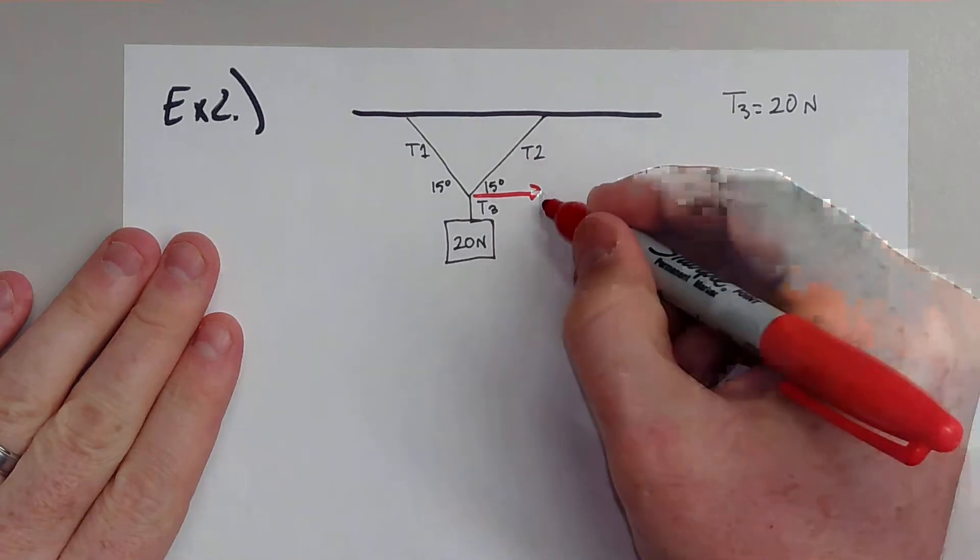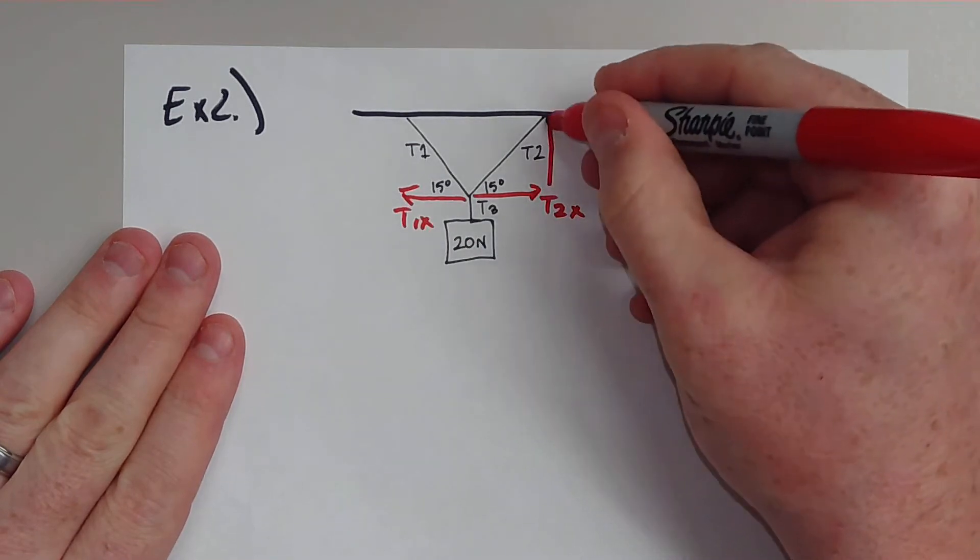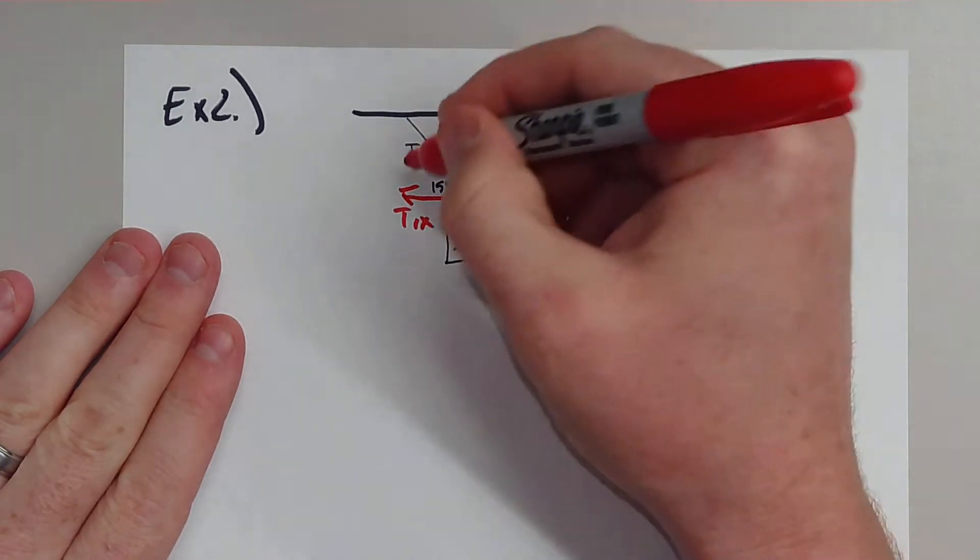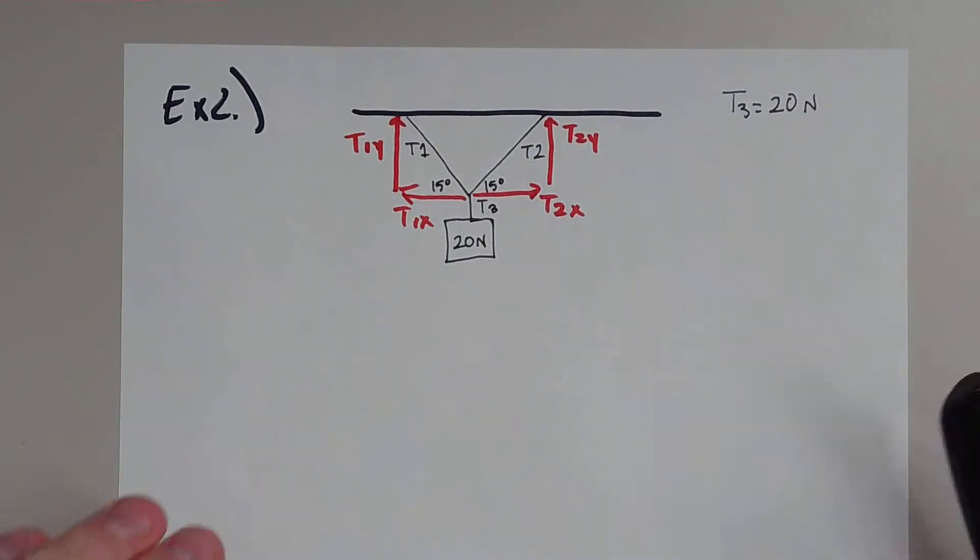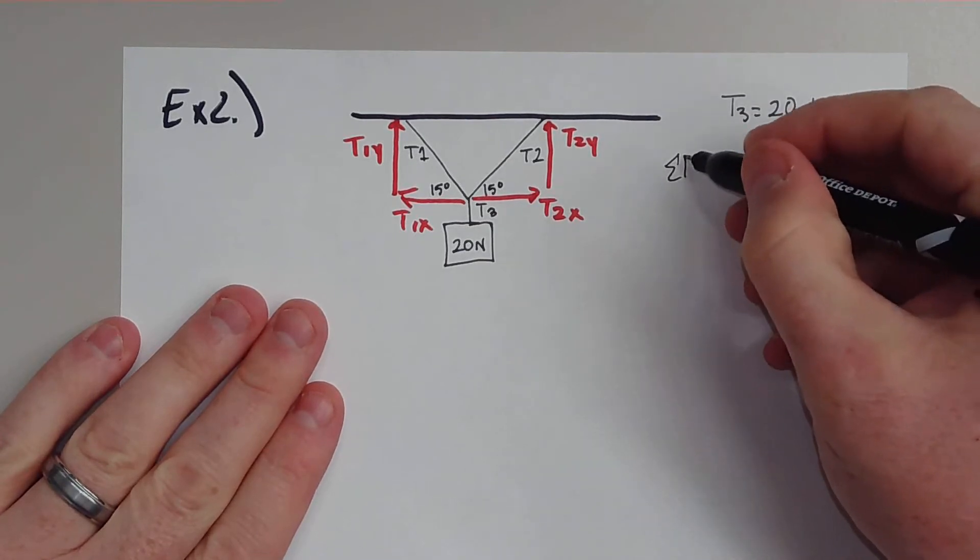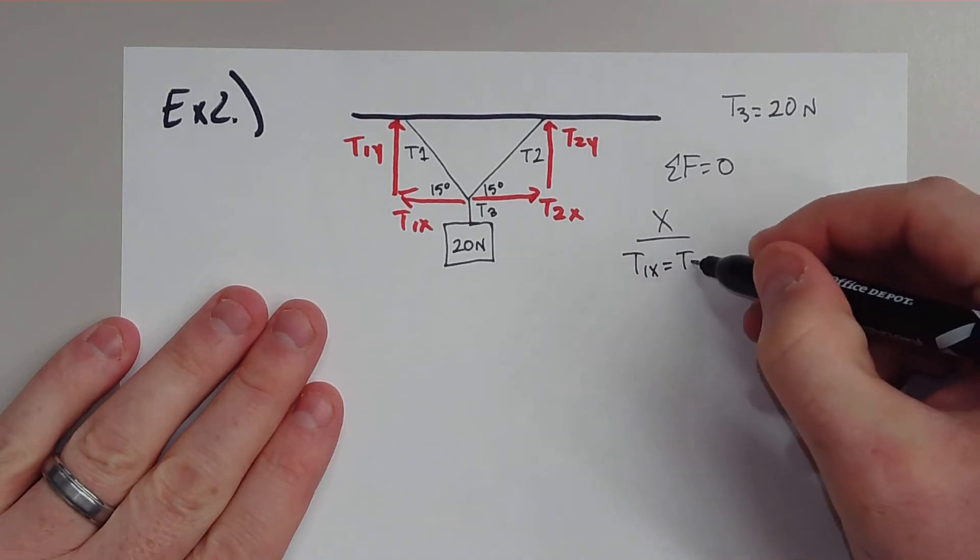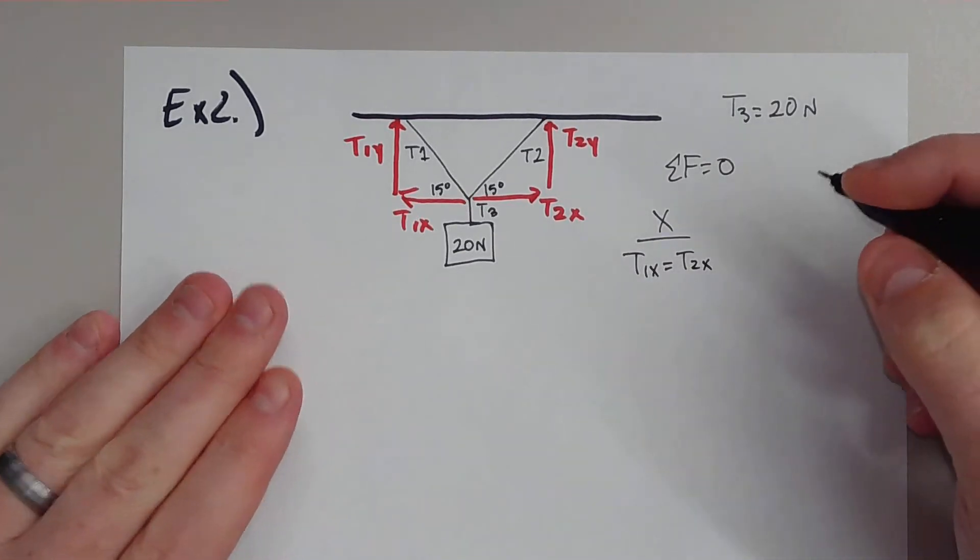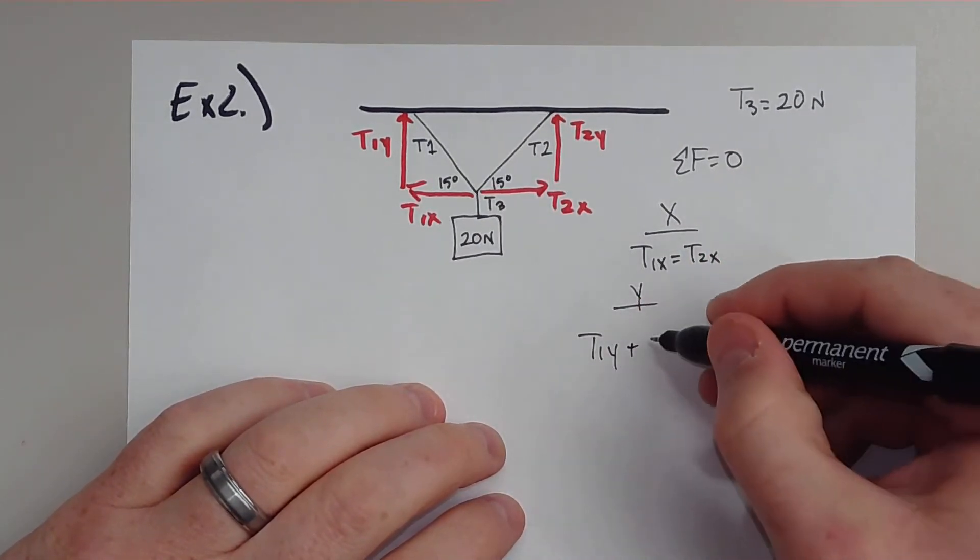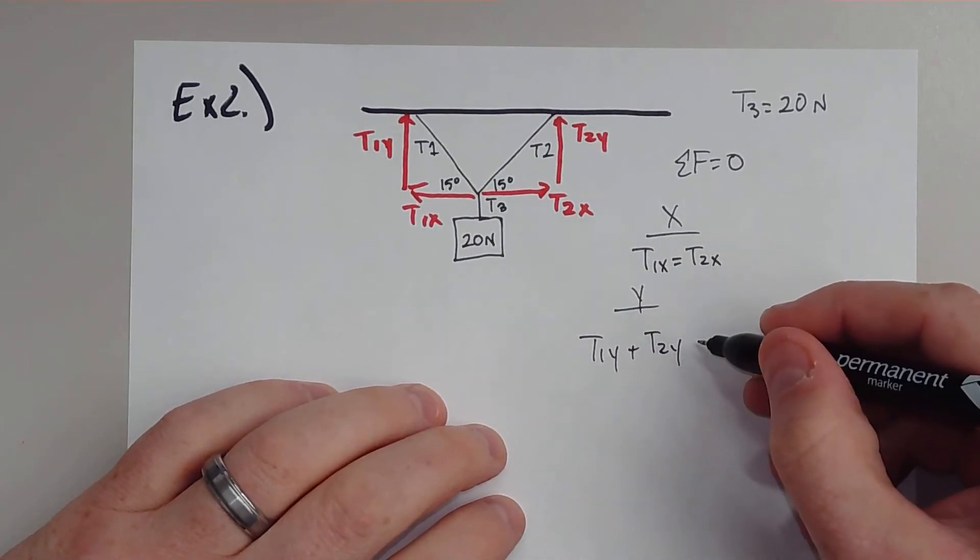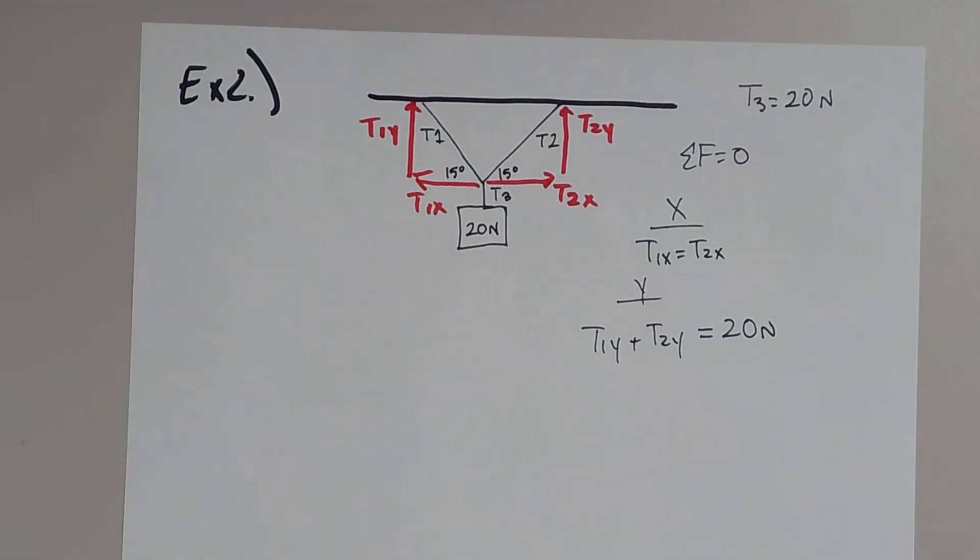But the question is now, what is the tension on 1 and the tension on 2? In order for us to do this, we have to understand that there are components. There's a T2X, and there's a T1X. There's a T2Y, and there's also a T1Y. Remember, all our forces have to equal zero. In the X direction, T1X has to equal T2X. And in the Y direction, T1Y plus T2Y must equal 20 newtons. So they have to equal this weight being pulled down.